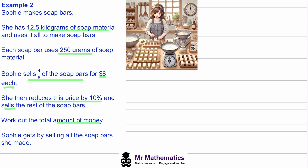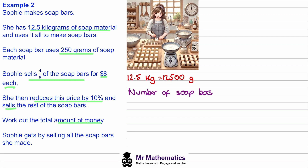Welcome back. She has 12.5 kilograms and each soap bar uses 250 grams. The first thing we need to do is convert to grams: one kilogram is 1000 grams, so we multiply by 1000 to get 12,500 grams. Now we work out the total number of soap bars: 12,500 divided by 250, which gives us 50 bars.